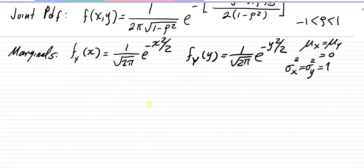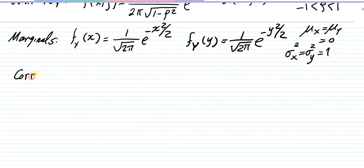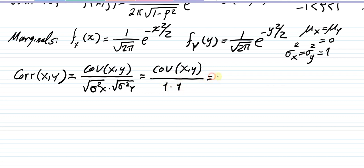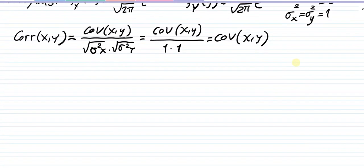Now let's look at the definition of correlation. Correlation between two variables X and Y is defined as the ratio of the covariance of X and Y over the square root of the variances σ²_x times σ²_y — or equivalently σ_x times σ_y. Correlation is essentially the normalized form of covariance, and that's how we get this definition.